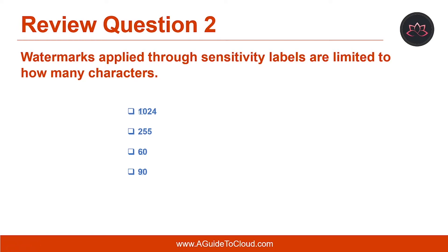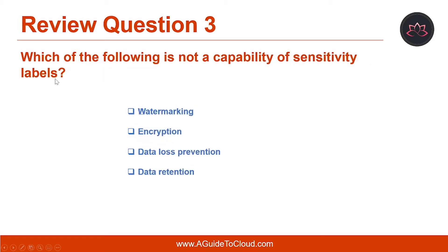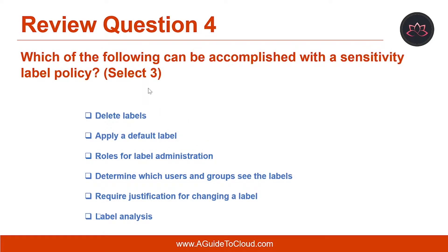Question number two: watermarks applied through sensitivity labels are limited to how many characters? The right answer is 255. Question number three: which of the following is not a capability of sensitivity labels? The right answer is data retention.